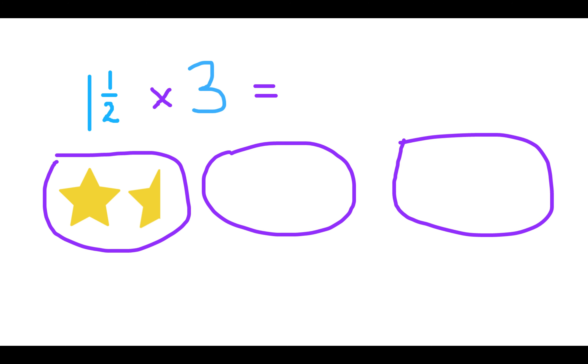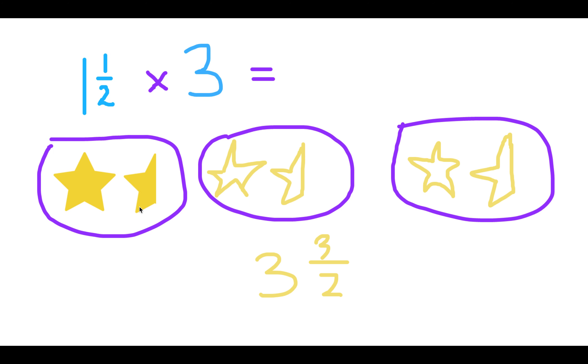So on your homework, you'll see examples like this. For example, I want to multiply one and a half times three. So I have one and a half stars. I'm going to draw that three times. So now I have three and three halves.